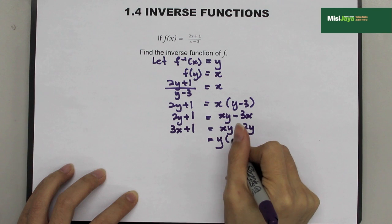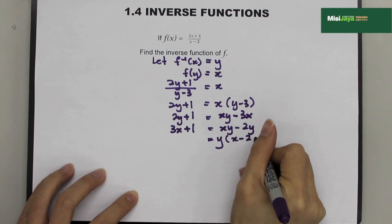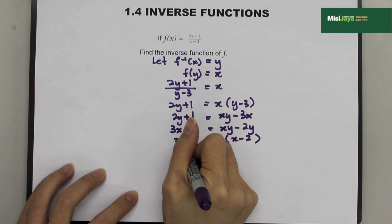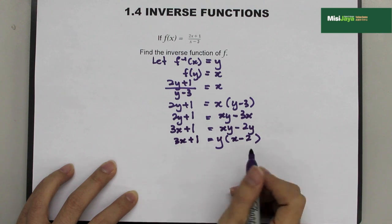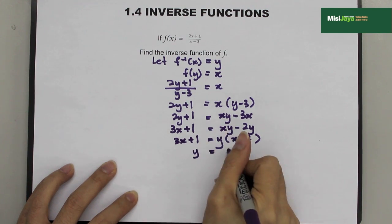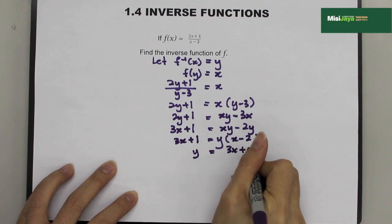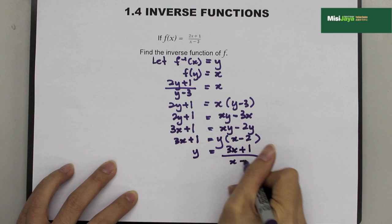So, we factorize the y. So, it becomes y(x - 2). Close bracket. Bring down 3x + 1. Then, we make y as a subject. So, y = (3x + 1)/(x - 2).